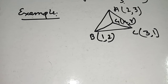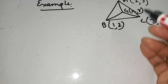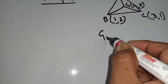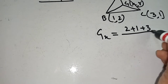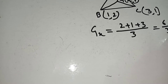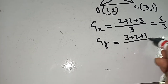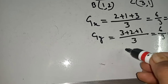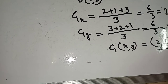The coordinates are: A is (2, 3), B is (1, 2), and C is (3, 1). The centroid is G(x, y). Here x1 = 2, y1 = 3, x2 = 1, y2 = 2, x3 = 3, y3 = 1. So Gx = 2 + 1 + 3 / 3 = 6 / 3 = 2. And Gy = 3 + 2 + 1 / 3 = 6 / 3 = 2. The coordinate of G is (2, 2). This is the answer.